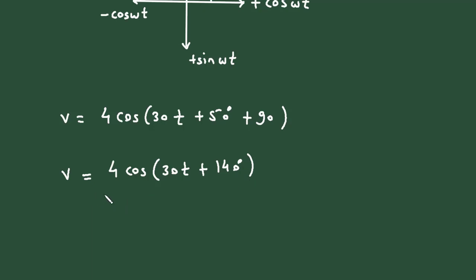So in phasor form this will be magnitude of v, that is capital V, and this will be 4 at an angle 140 degrees. So this is the final answer for this question, and it is in phasor form.